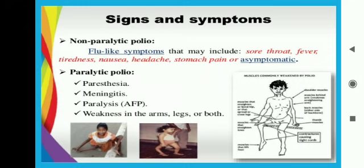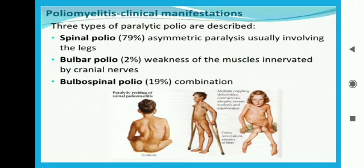In paralytic polio, there will be paresthesia, meningitis (inflammation of the brain), and paralysis with weakness in the arms, legs, or both. Patients with poliomyelitis show visible muscle weakness, and the affected limb displays very thin muscles on the paralyzed side.